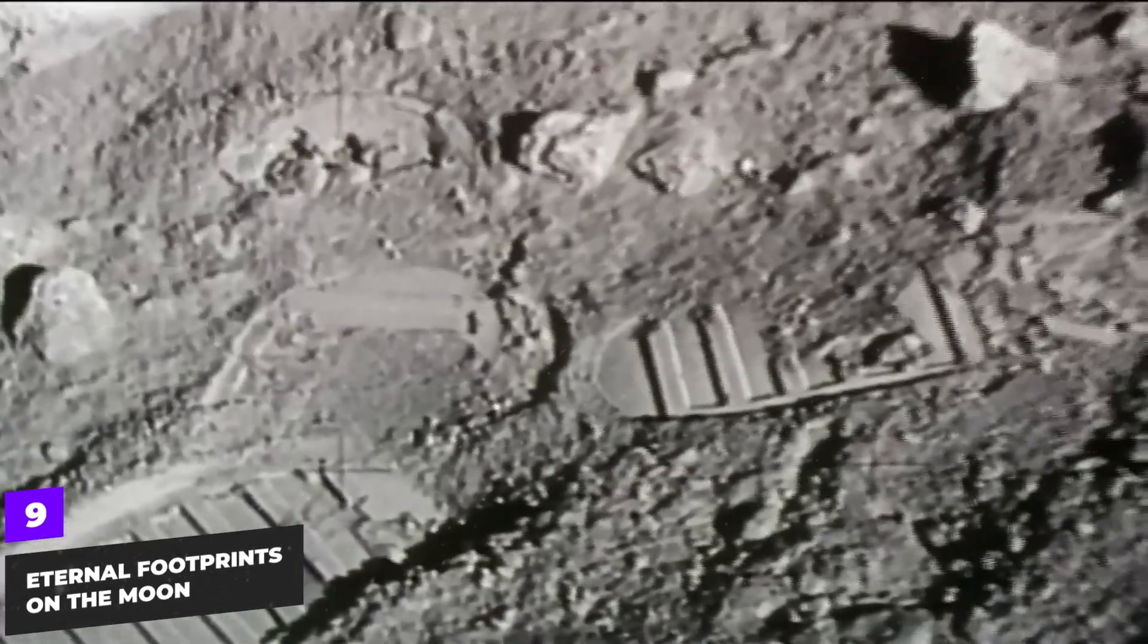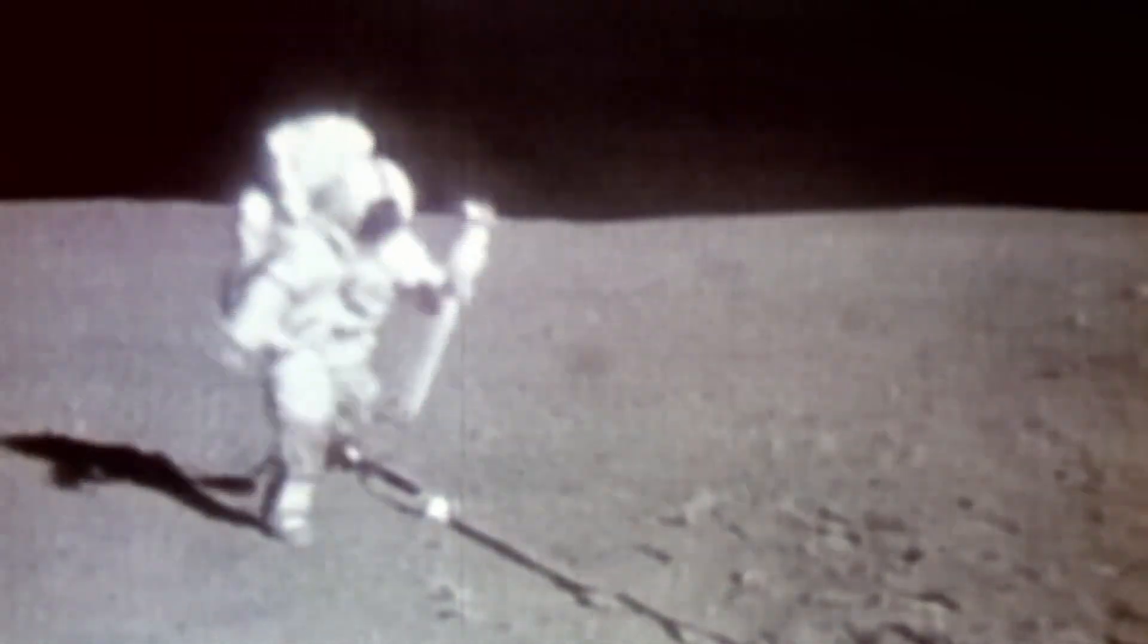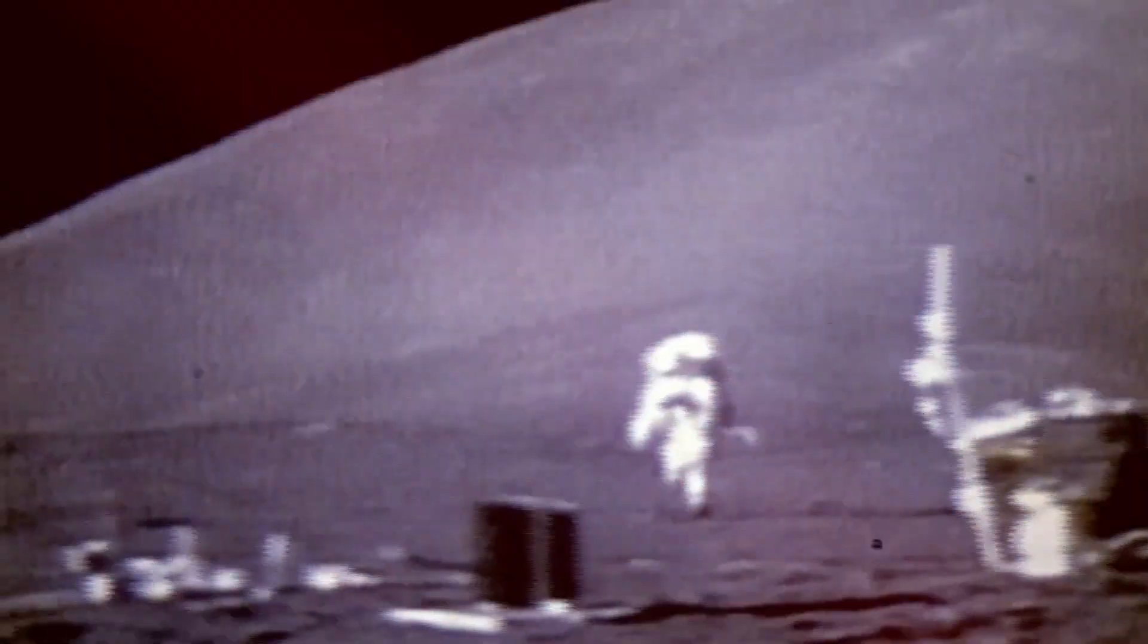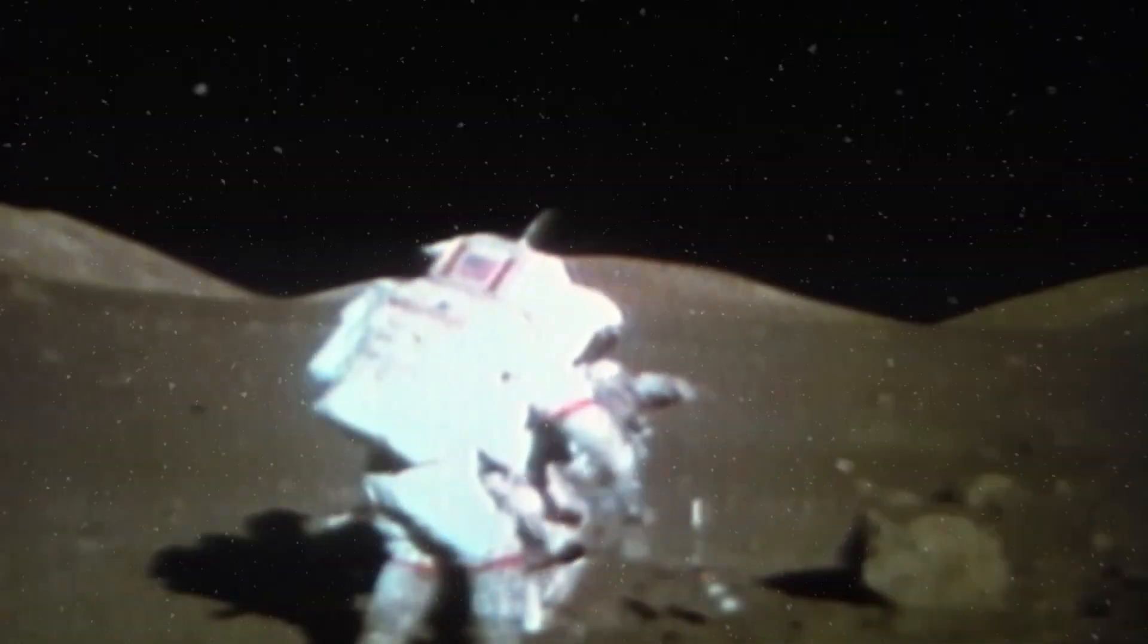Eternal footprints on the Moon. The Moon has no atmosphere, which means there's no wind or water to erode or wash away the Apollo astronauts' footprints. These footprints could remain on the Moon's surface for millions of years, serving as a long-lasting testament to human exploration.